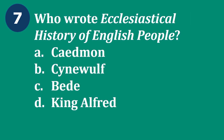Question 7: Who wrote Ecclesiastical History of English People? A. Cadmon, B. Seinwolf, C. Bede, D. King Alfred. The correct answer is C — Bede. Bede wrote the Ecclesiastical History of English People.